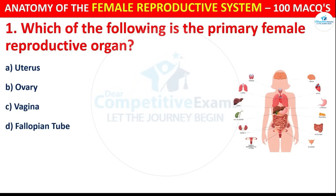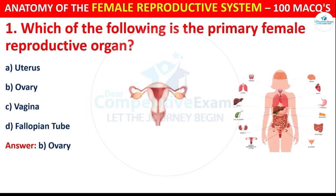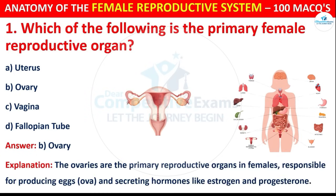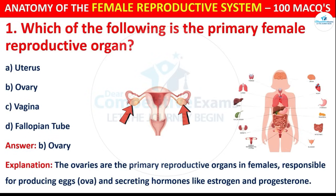The correct answer is B, i.e. Ovary. The ovaries are the primary reproductive organs in females, responsible for producing eggs and secreting hormones like estrogen and progesterone.